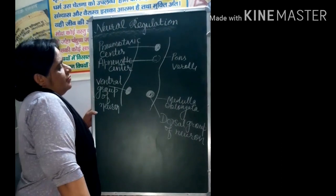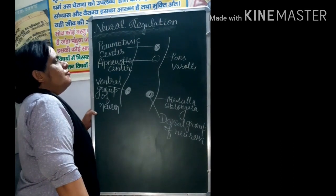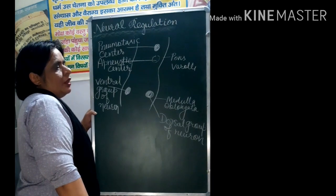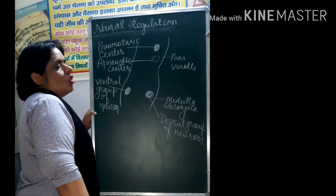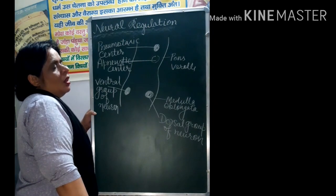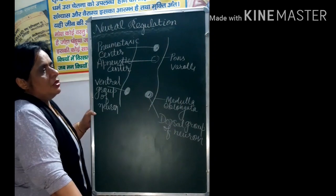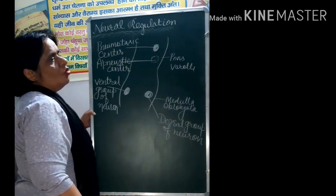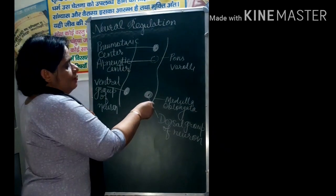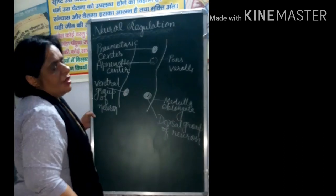First we talk about the center of Medulla Oblongata. Then we talk about the center of Medulla Oblongata and this is called Rhythmicity center.